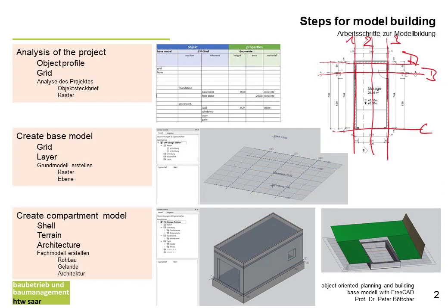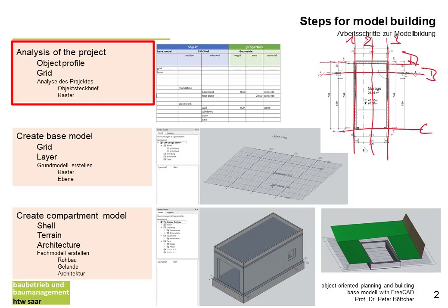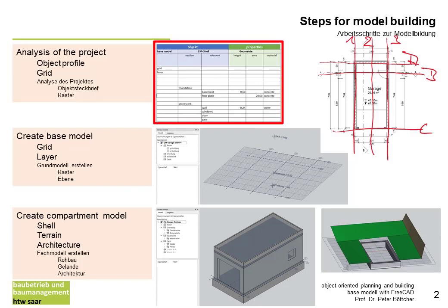When you start planning a building and you want to do it in BIM, you have to analyze in the first step the project and the building. This you do with a piece of paper and a pencil, maybe an Excel sheet. You have to find the main objects of your project and the properties of these objects, and write them down in an object profile.